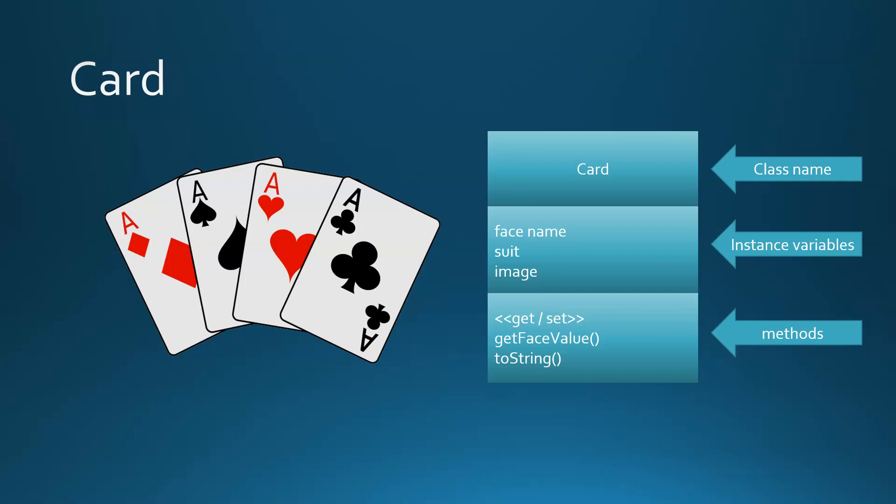We'll also get the face value — we're not going to store the value of the cards, but we need some way of comparing them, like is a 3 greater than a 2. So we'll have a method for that. The toString method is just a little method we're going to create to represent the card as a string. So let's get started.